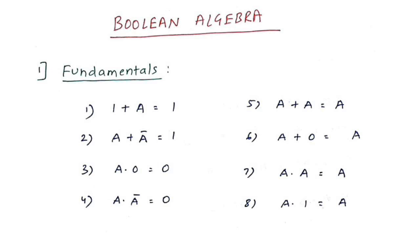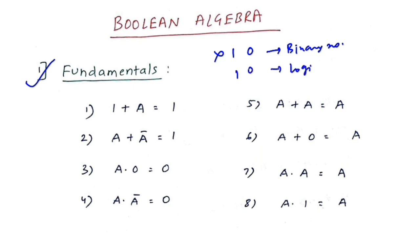In this video we will understand about Boolean algebra basics, so make sure you watch this video completely to get your basics right. The first point is fundamentals. You have to understand that one and zero are not binary numbers — this is a wrong assumption. One and zero represent logic one, which means VCC, and logic zero, which means ground.